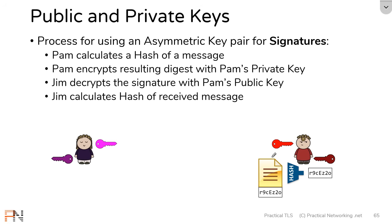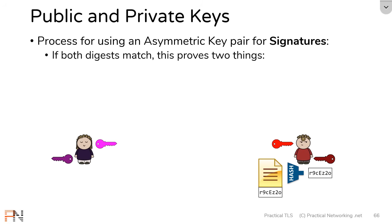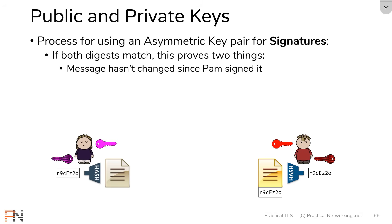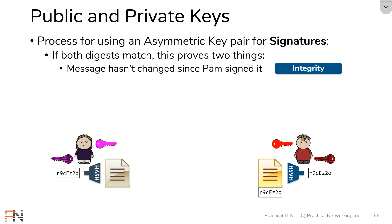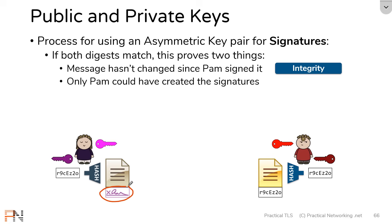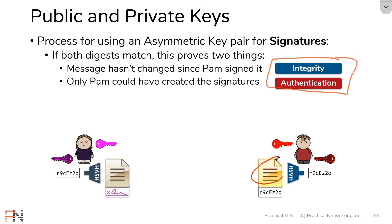Jim then independently calculates a hash of that message. If the digest Jim calculated matches the digest Pam sent, this proves two things. First, it proves the message has not changed since Pam signed it — if anything changed, Jim would have gotten a different digest. This gives us the property of integrity. Second, it proves only Pam could have created the signature, because the signature was created using Pam's private key. If Jim was able to decrypt it with Pam's public key, it proves Pam's private key signed it — and only Pam has that key. This gives us authentication.